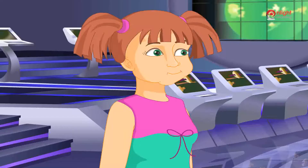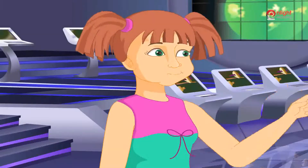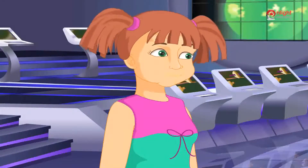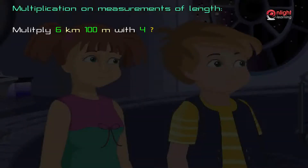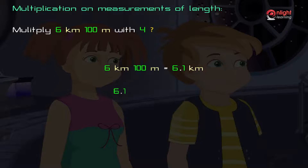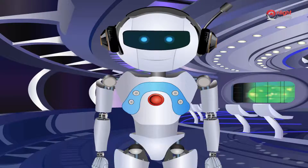Let us express the quantities in a common unit. We shall express all the quantities in kilometers. Hence, 6 kilometers 100 meters is equal to 6.1 kilometers. 6.1 multiplied by 4 is equal to 24.4 kilometers.